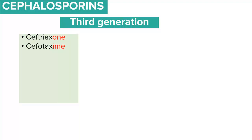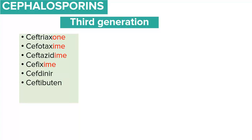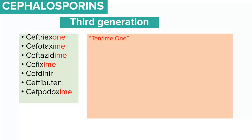The third-generation cephalosporins include ceftriaxone — the most common — cefotaxime, ceftazidime, cefixime, cefdinir, ceftibuten, and cefpodoxime. The names contain the prefixes 'tri', 'tax', 'im', or 'on'. Something unique about this generation is that they cross the blood-brain barrier. For this reason, ceftriaxone is the most common drug used in bacterial meningitis treatment.